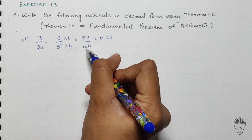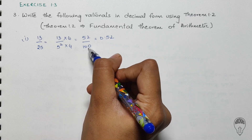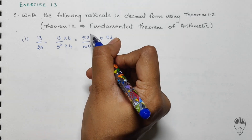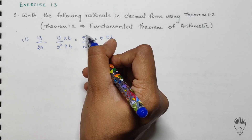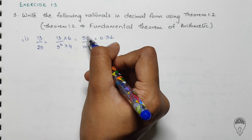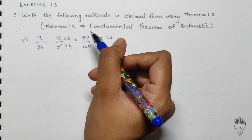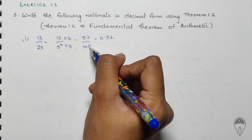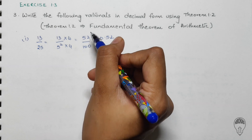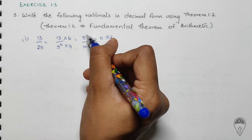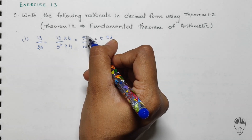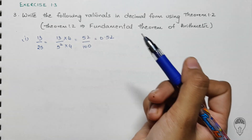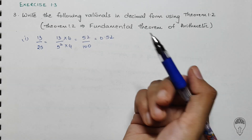Since the number of zeros in the denominator can be used to move the decimal point — we have two zeros in the denominator, so we move the decimal point to the left-hand side by two places.